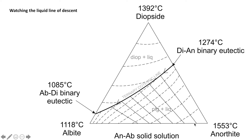Along that line: here is 100% anorthite, here is 90% anorthite / 10% albite, 80/20, 70/30, and so on. Between the binary eutectic points we have our ternary cotectic line that connects the two binary diagrams, with temperature decreasing from between anorthite and diopside down towards between albite and diopside.